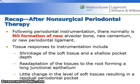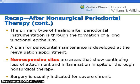In summary for non-surgical periodontal therapy: following periodontal instrumentation, there normally is no formation of new alveolar bone, cementum, or PDL. Tissue responses to instrumentation include shrinkage, re-adaptation, or no change. The primary type of healing is through the formation of a long junctional epithelium. A plan for periodontal maintenance is developed at the re-evaluation appointment. Non-responsive sites show continuing loss of attachment and inflammation despite thorough non-surgical therapy. Surgery is indicated for severe chronic periodontitis.